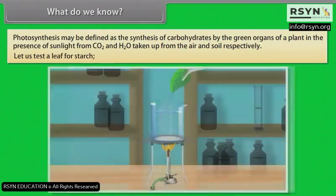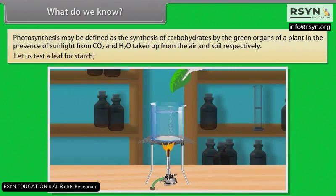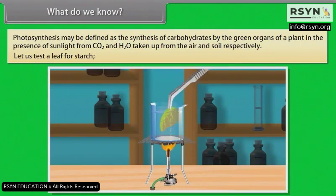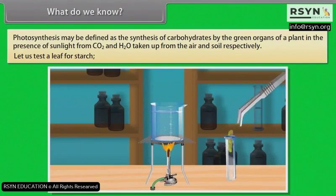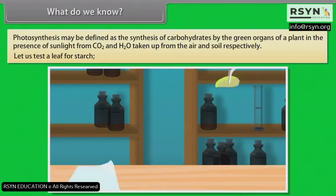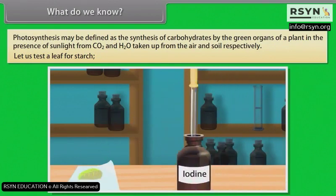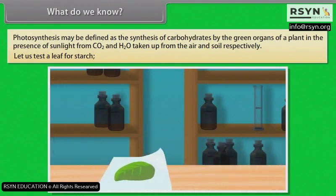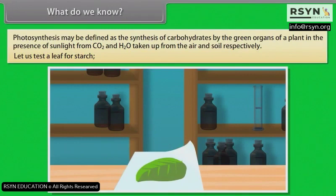To test a leaf for starch: remove a green leaf from a plant, use forceps to place it in boiling water, and boil for 2 minutes. Then place the boiled leaf in a boiling tube containing 90% ethanol and heat until the leaf decolorizes. Remove the leaf, wash it with cold tap water, spread it on a white surface, and add a few drops of iodine solution. The leaf turns dark blue, indicating the presence of starch and proving that photosynthesis has occurred.